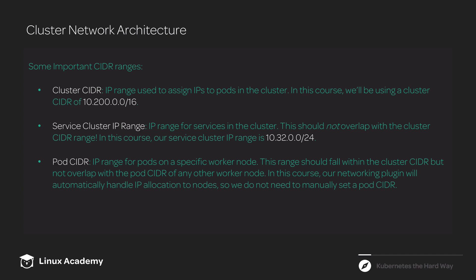If you're not familiar with what a CIDR is, that's fine — we're not going to go too deeply into it. All you really need to know right now is that CIDR is a way of allocating IP addresses, and it provides a way to specify a CIDR range, which is just a notation for showing a particular range of IP addresses. For example, the cluster CIDR 10.200.0.0/16 represents a range that goes from 10.200.0.0 all the way to 10.200.255.255 — just a range of IP addresses set aside for a particular purpose.